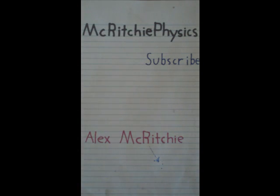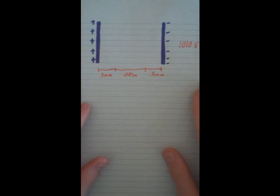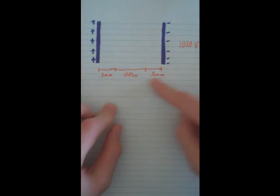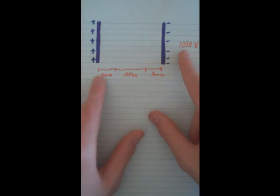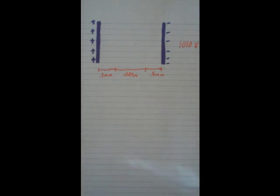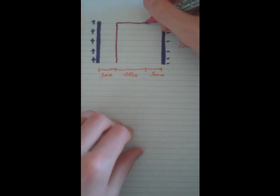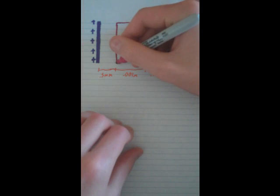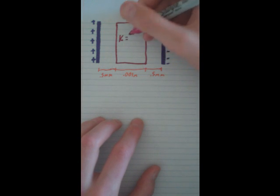Hey guys, this lesson is on using the dielectric constant with electric potential. So let's say we have a capacitor with two millimeters in between it and it has a potential difference of one thousand and ten volts. And what we should do is put in an insulator, and this insulator has a dielectric constant of 3.5.